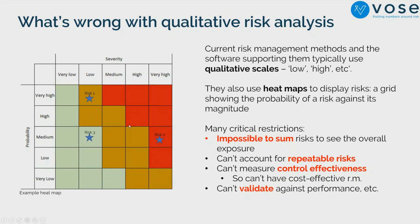With quantitative information — for example a risk with a 20% chance of occurring — you can look back historically and see how often those risks actually did occur. If they only occurred 10% of the time, you can see that you tend to overestimate. That means you can validate your estimates, which you really cannot do with a qualitative system. If you can validate, you can improve — over time you get better at your estimates and build corporate learning.